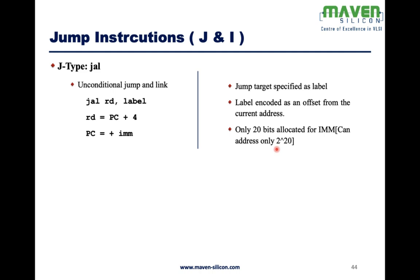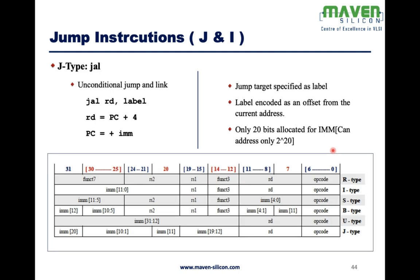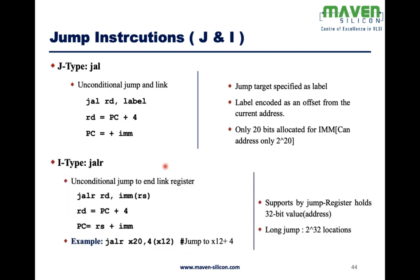If you look at the instruction format, we have only 20 bits allocated for the immediate value, so the maximum we can address is 2 to the power of 20. If you want to jump to any particular location, the maximum range achievable is 2^20 — it cannot do a long jump. This is why we need another instruction like JALR. With J-type JAL, you have only 20 bits for the immediate value.